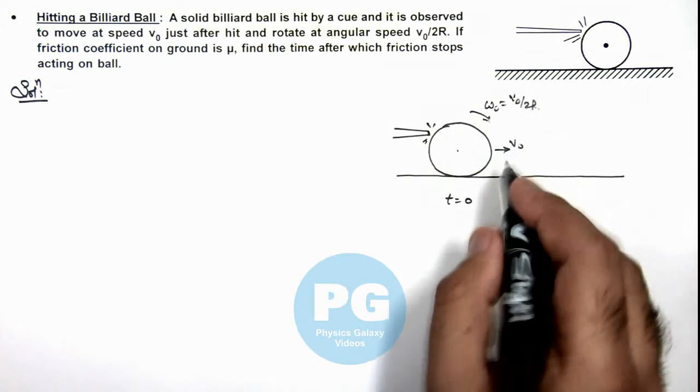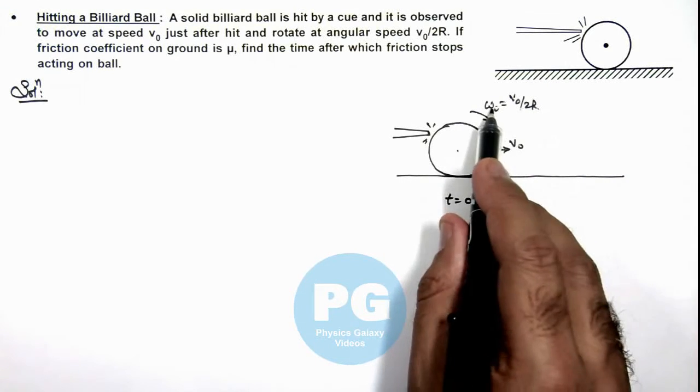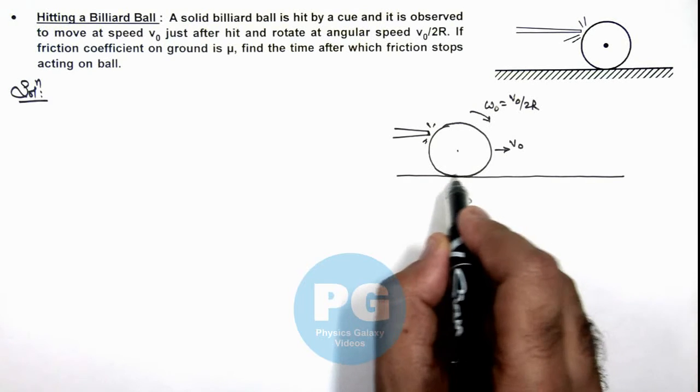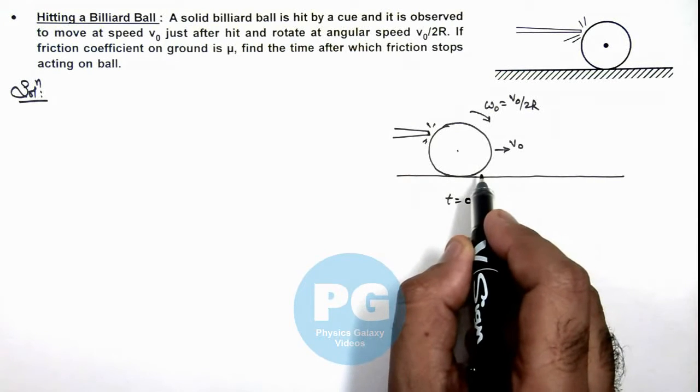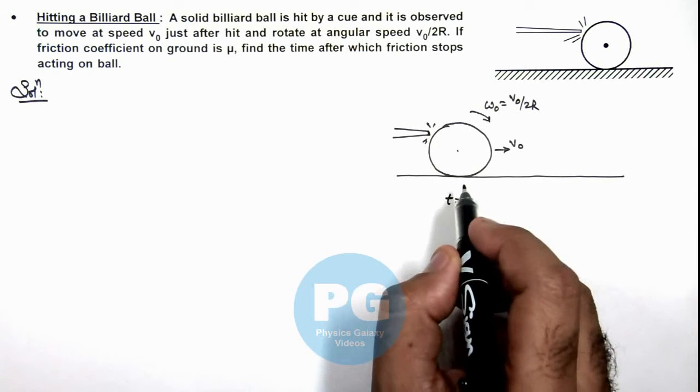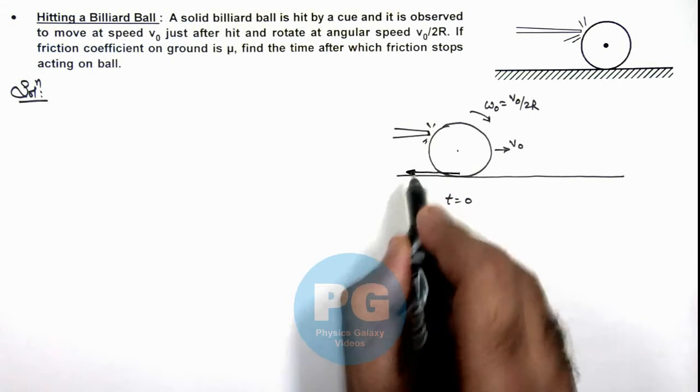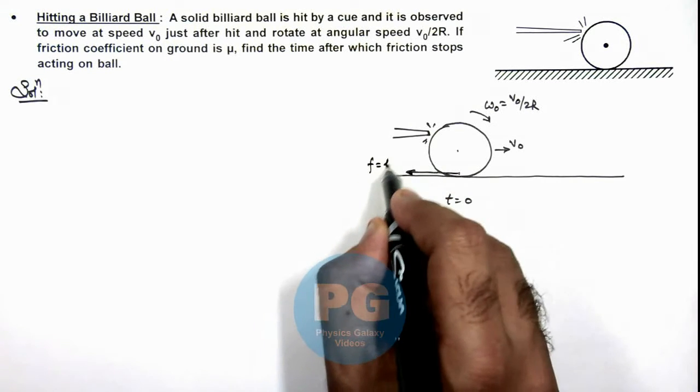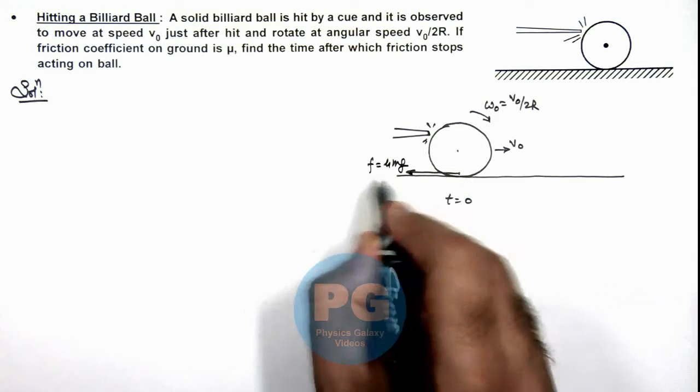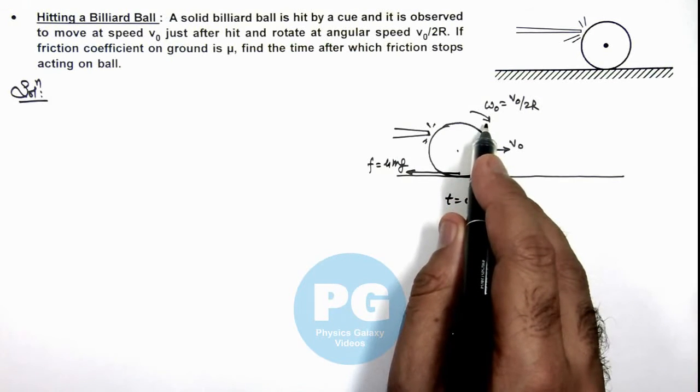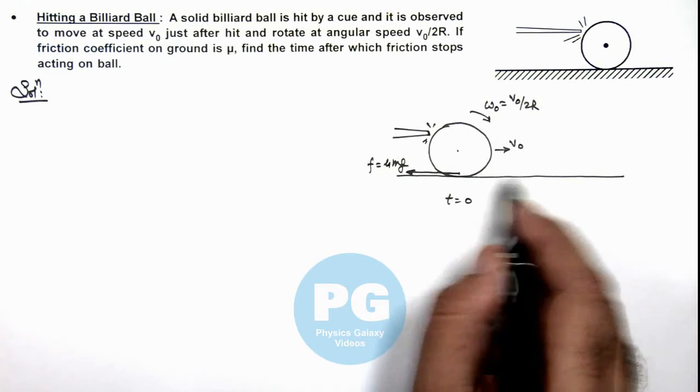Here we can see that v₀ is more than rω₀, that means the bottommost point will have a forward sliding tendency. So on this ball friction, which is μmg, will be acting in backward direction, which will have a tendency to increase the value of angular speed and oppose the linear speed.